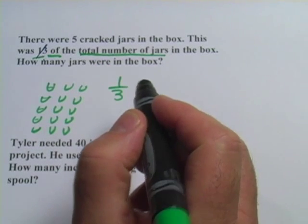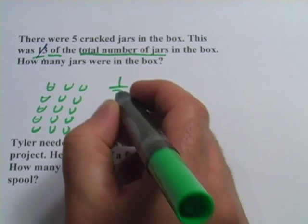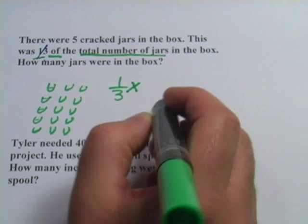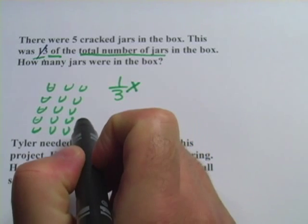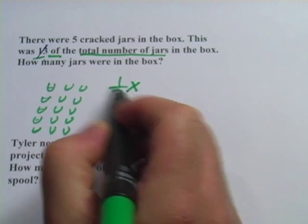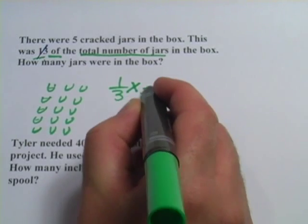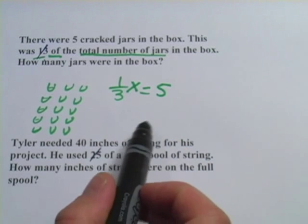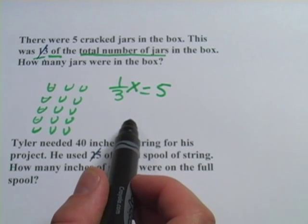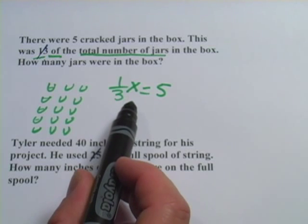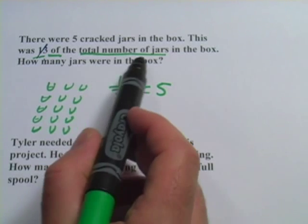Well, that's the thing we're trying to find. We don't know that. That's the unknown. So I'm going to call that X. But we do know one more thing: one-third of the total number is five. There were five cracked jars. So now we have an algebra formula, and we can solve for X, and X is going to be that total number of jars.